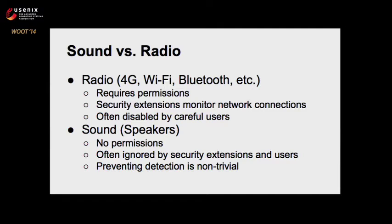One of the first questions my advisor asked me was: why does this matter? All of these attacks can be done with Bluetooth. Well, over time, radio — including 4G, Wi-Fi, and Bluetooth — has received a lot of attention in terms of security, and protections have evolved. For example, with Android, you need a permission to use the network or Bluetooth. There are information flow control security extensions; TaintDroid is a really good example for Android, and they monitor network ports. So if the device is trying to send out your credit card number over the internet, these extensions can detect and stop it. And a very paranoid user can disable all radio networking capabilities so there's no way data could get off. However, in terms of sound, most of these protections go away.